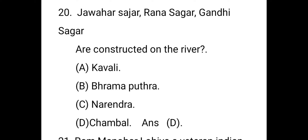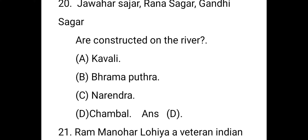Jawahar Sagar, Rana Sagar, and Gandhi Sagar are constructed on which river? The right answer is the Chambal river. The Chambal Valley projects are on the Chambal river, located 29 km upstream of Kota city and 26 km downstream of Rana Pratap Sagar dam. The dam is 45 meters in height and 393 meters long, generating 60 megawatts of power, completed in 1972 with a total catchment area of 27,195 square kilometers.